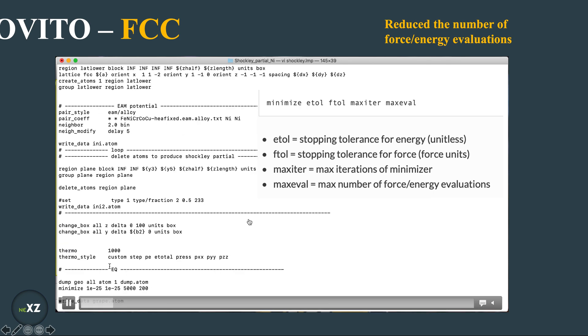And if I go to another script which I have written. So in this script I have given one dump every one thermodynamic step so that I can see the complete transition and then I am using the minimization command and reducing the number of evaluations of force/energy to 200 from 10,000 to 200 so that I can have less number of iterations and the simulation is done faster.